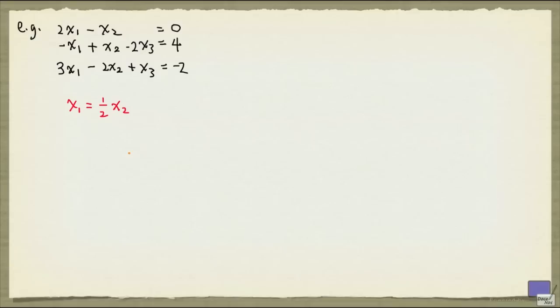What this is saying is, if I know what value x2 is, then x1 has to be 1 half x2. Now, armed with that knowledge, what I can do is every time I see x1, I can replace it with 1 half x2.